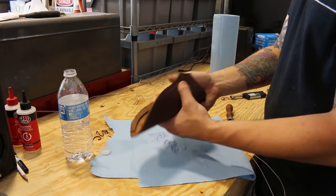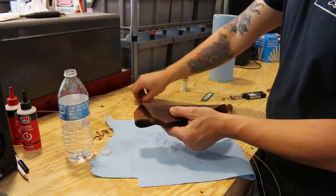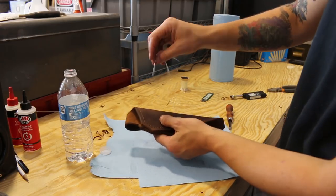Once the belt loop is done, I'll move on to stitching the welt. I prefer to start at the top and work my way down towards the bottom of the sheath.